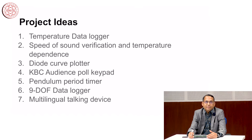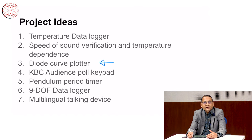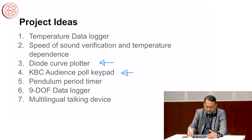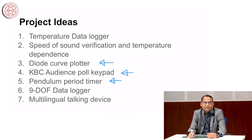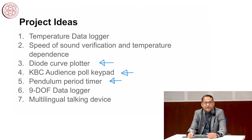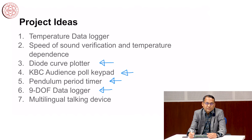You can build a project for the speed of sound verification and its temperature dependence. You can create a project for automatic plotting of characteristic curves of diodes and other two-pin electronic devices. You can create an audience poll keypad for a Kaun Banega Crorepati-style program. You can create a system to measure the time period of a pendulum — much more accurately than using a stopwatch in a physics lab. You can build a data logger that records 9 degrees of freedom information, relating to magnetometer and accelerometer data.